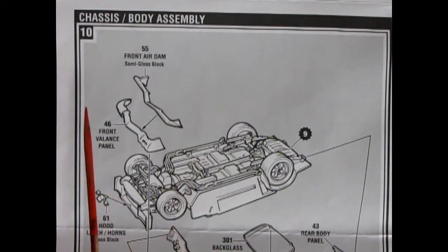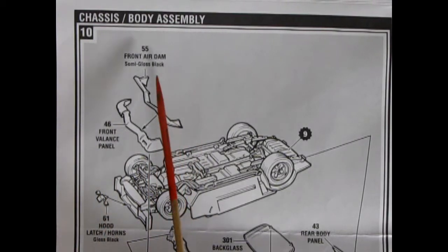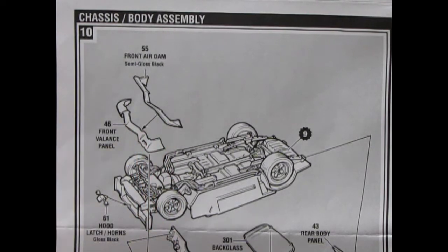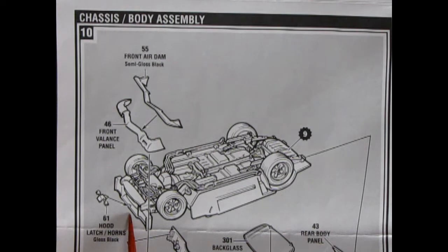And, here we have the chassis body assembly for step ten. Here, we have a front air dam, which glues underneath the front valance plate. So, this would stick out ahead of the car underneath. We've got our hood latch and horns going onto the front of the radiator support.